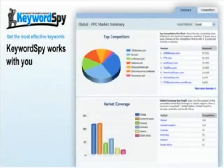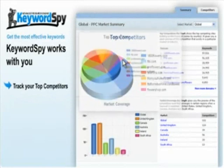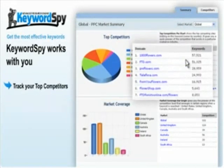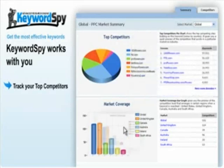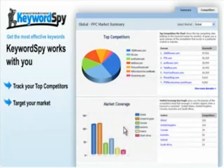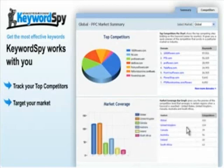With PPC Market Summary, the pie graph lets you track the winners in your industry or your top competitors. It gives you a quick preview of the competition landscape that exists in a particular market or industry. The bar graph shows you the preview of the competition level that emerges in certain regions when a keyword is searched.